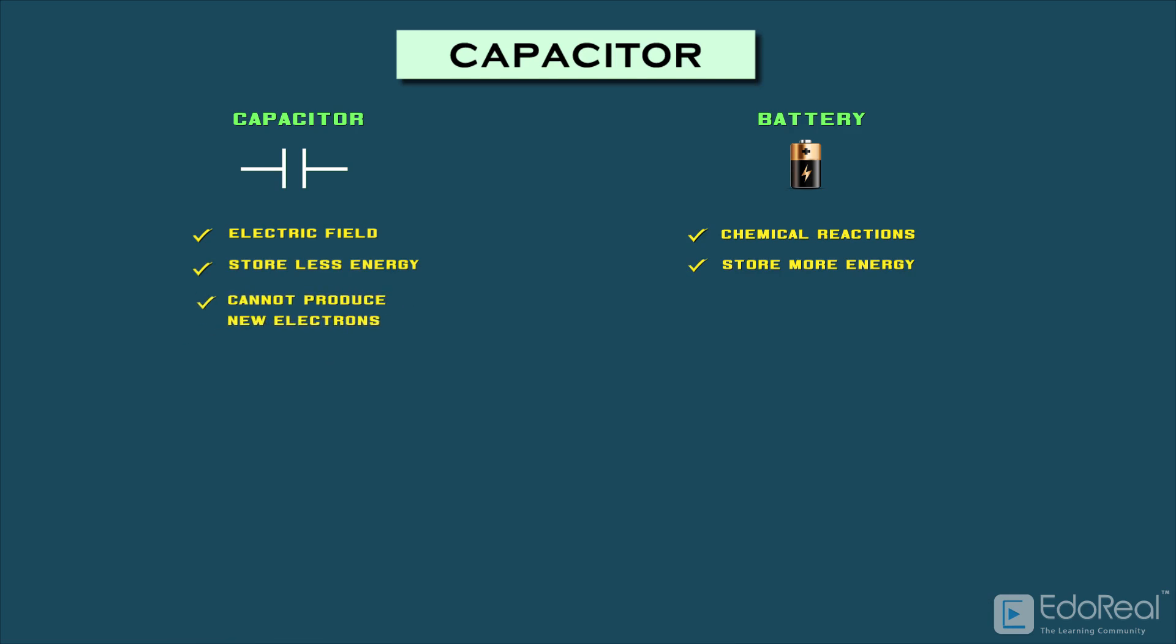The capacitor can't produce new electrons. It just stores energy only when the current passing through it.